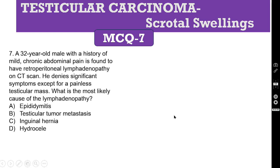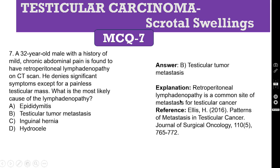MCQ 7. A 32-year-old male with a history of mild chronic abdominal pain is found to have retroperitoneal lymphadenopathy on CT scan. He denies significant symptoms except for a painless testicular mass. What is the most likely cause of the lymphadenopathy? The correct answer is testicular tumor metastasis. Retroperitoneal lymphadenopathy is a common site of metastasis for testicular cancer. Reference: Patterns of Metastasis in Testicular Cancer, Journal of Surgical Oncology.